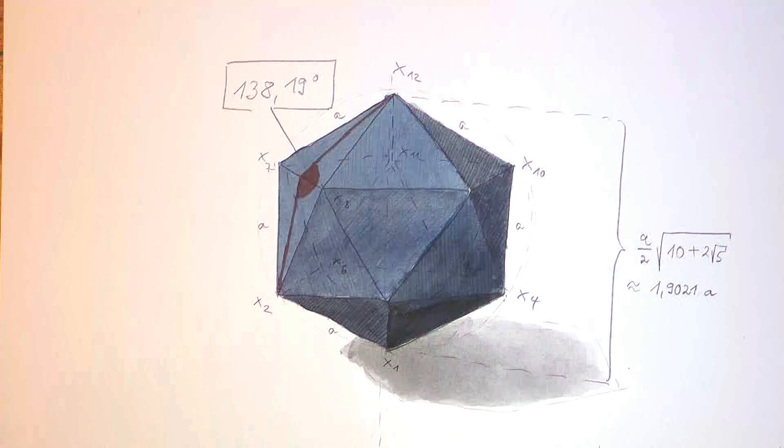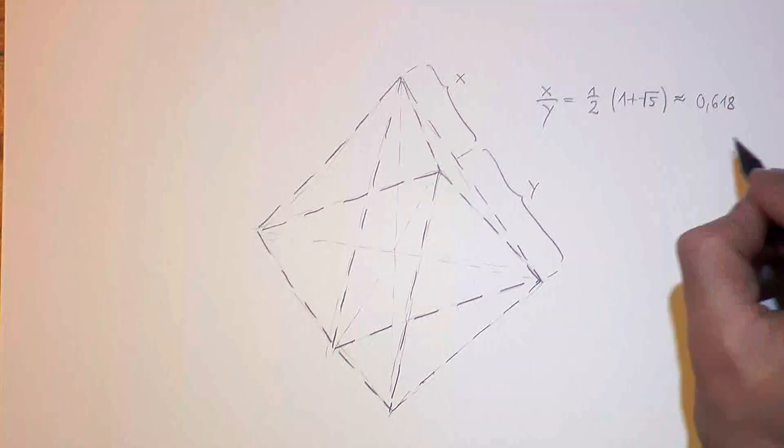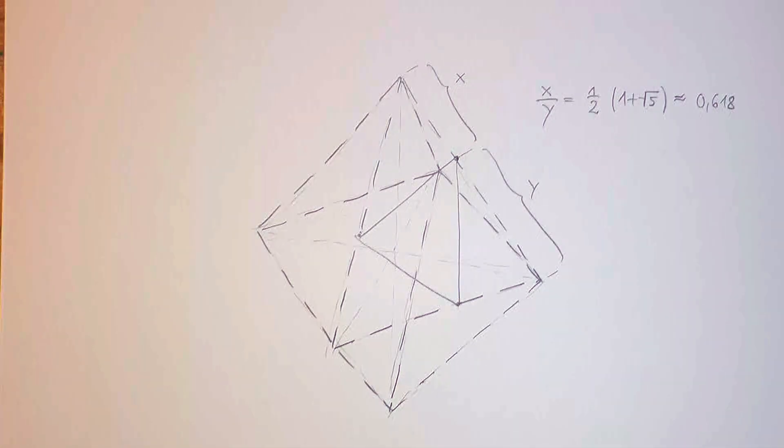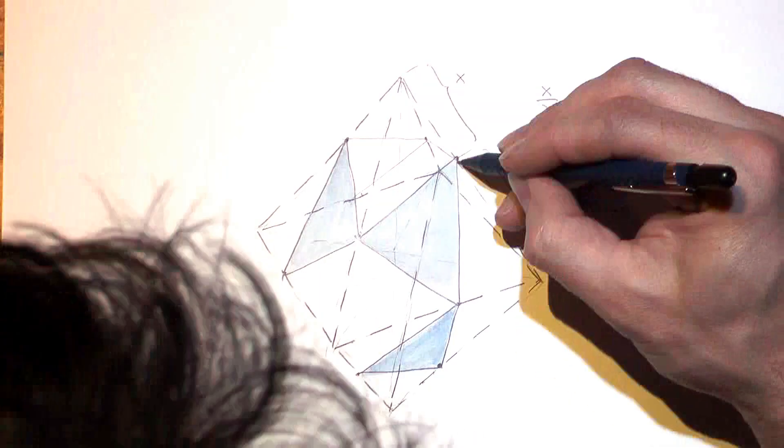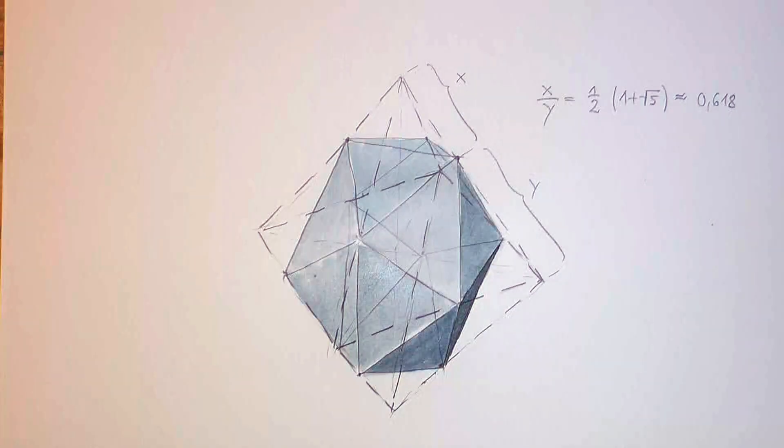But there's still hope. It's difficult to see. But if you take an octahedron and cut away everything that doesn't belong to the icosahedron that already hides inside it, you can make an icosahedron.